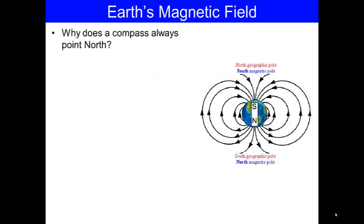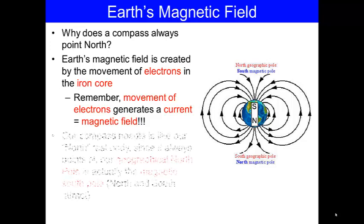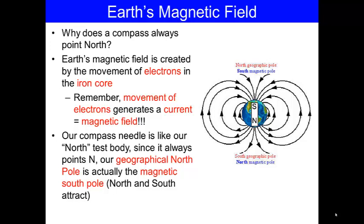Why does a compass always point north? Earth's magnetic field is created by the movement of electrons in its core. A movement of electrons generates a current, and this current creates a magnetic field. Our compass needle is like our north test body since it always points north. This means our north geographical pole is actually the magnetic south pole, because north and south attract.